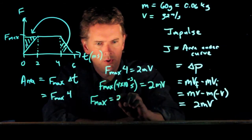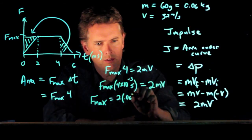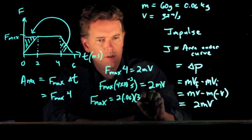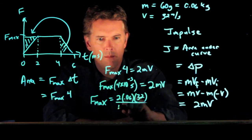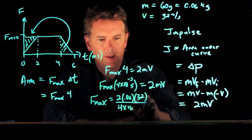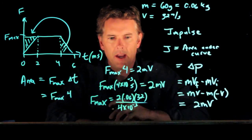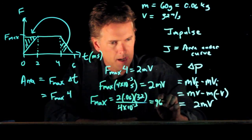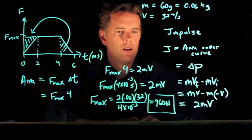We get 2 times the mass, which we said was 0.06. V was 32. And the bottom becomes 4 times 10 to the minus 3. And all this is SI units now. And if you plug those into your calculator, you should get 960 newtons.